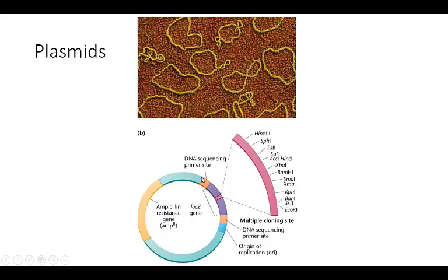Here's an example of a plasmid. It has a multiple cloning site, and within that site you can see all of these different restriction sites located there. You can look up what the cut sites are for different fragments and see what is compatible with the particular gene you'd like to clone in. This plasmid also has an ampicillin-resistance gene, which means you can add ampicillin to the culture media and only host cells that have taken up this plasmid should be able to grow. There's also a LacZ gene with a multiple cloning site within it.